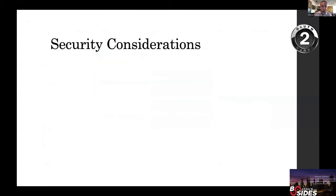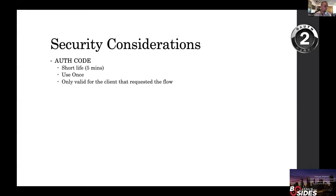Some considerations about this flow: The authorization code is the first token generated and is passed in the URL — it's only meant for the redirect and for exchange. It should be usable only once and is very short-lived, typically five minutes or less, since it's used as part of a series of automated redirects. Once it is used, it should expire.